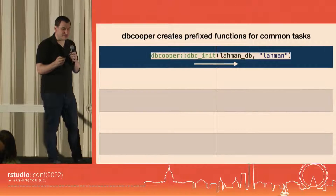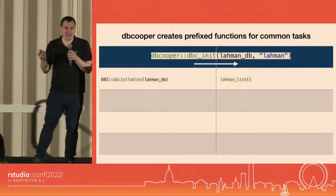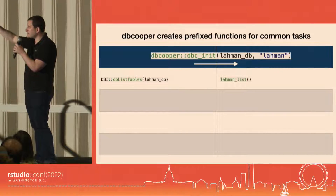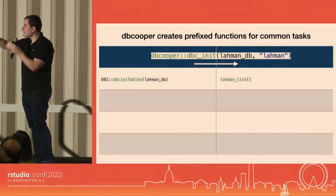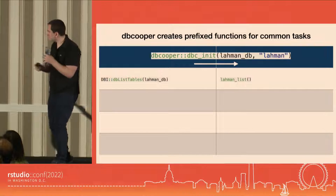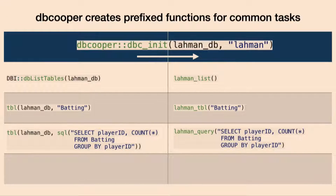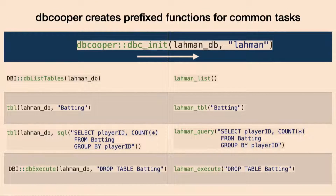I'll show how each of those tasks would be achieved in DB Cooper. Once you've run dbcinit, instead of doing db_list_tables, I would just do lahman_list. That prefix I passed it turned into a prefix for the function. lahman_list returns the list of tables in the database. If I want to access just one table, I use lahman_tbl and pass it the name of the table. If I wanted to run a query, I do lahman_query and pass the SQL. And if I wanted to execute, I'd use lahman_execute.